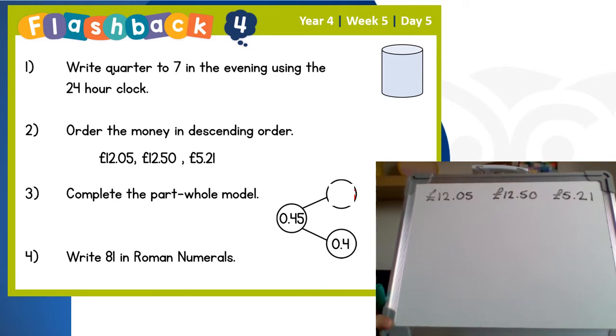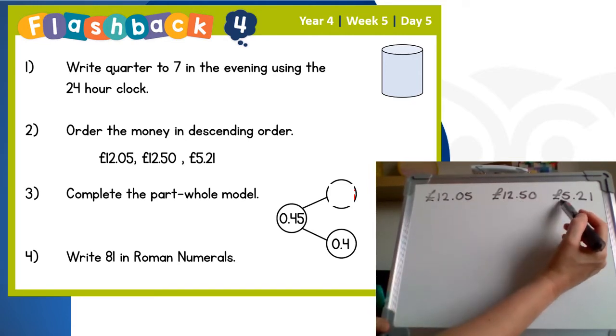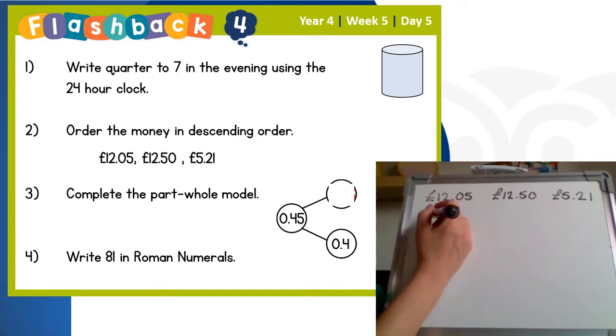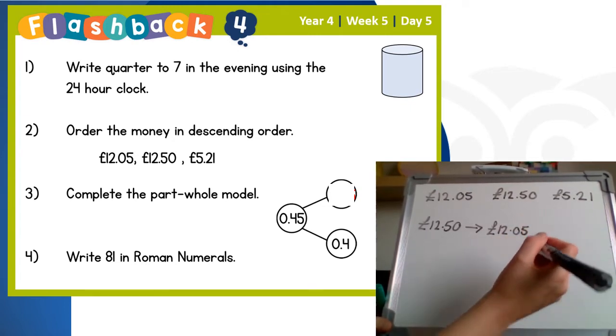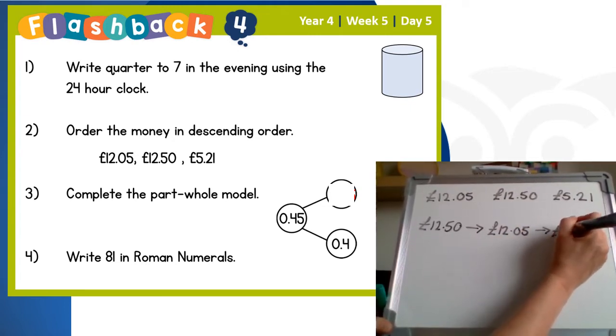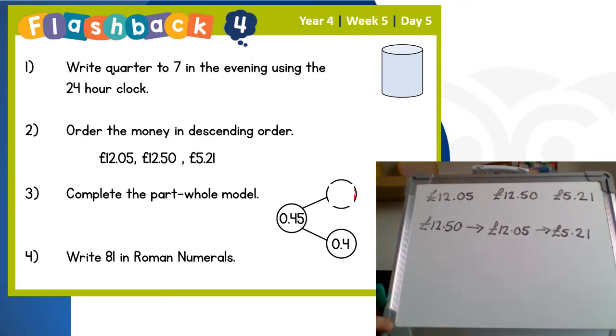Number two: order these amounts in descending order. We have £12.05—the zero means we've got no 10ps but we've got 5p—£12.50, and £5.21. In descending order we start with the biggest amount, which is £12.50, then the next smallest is £12.05, and the smallest one is £5.21.